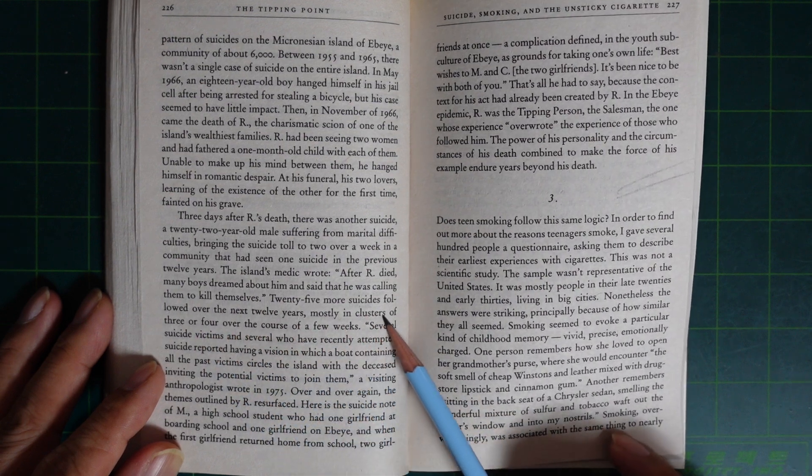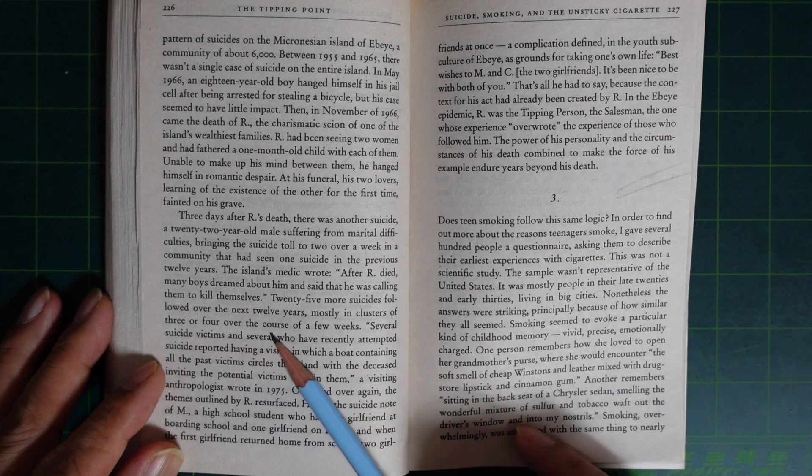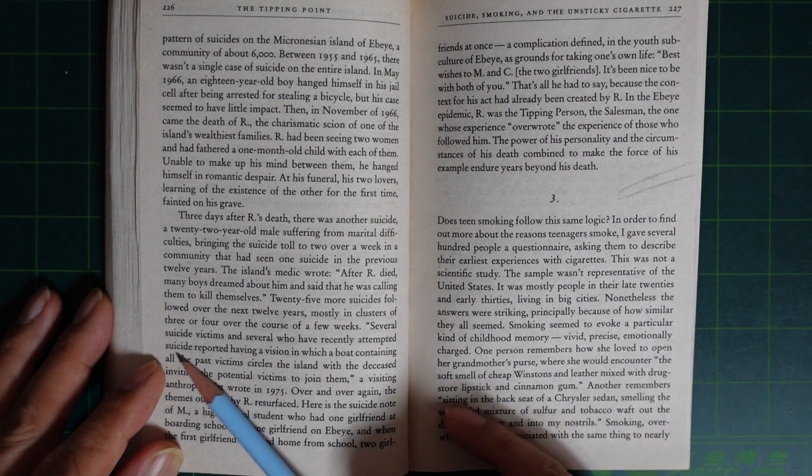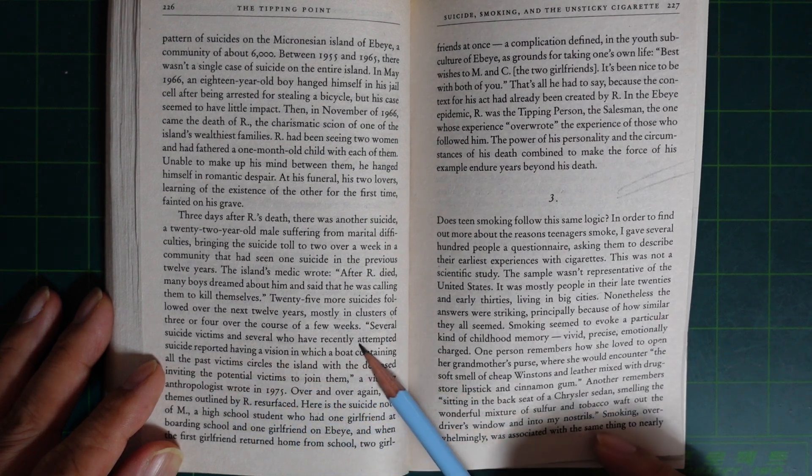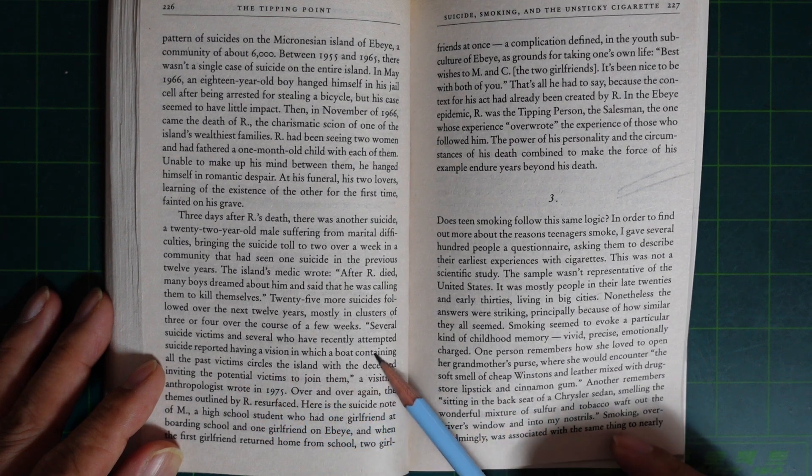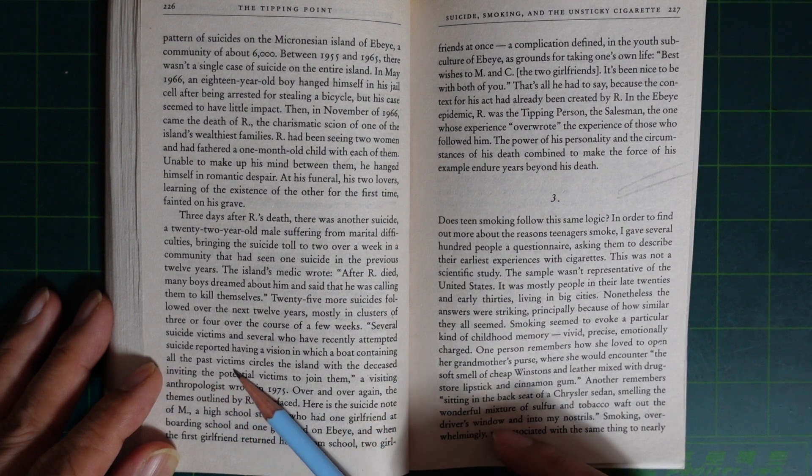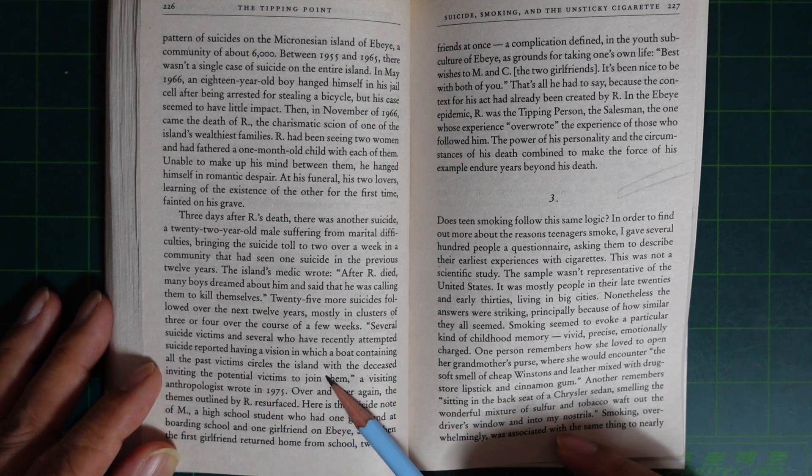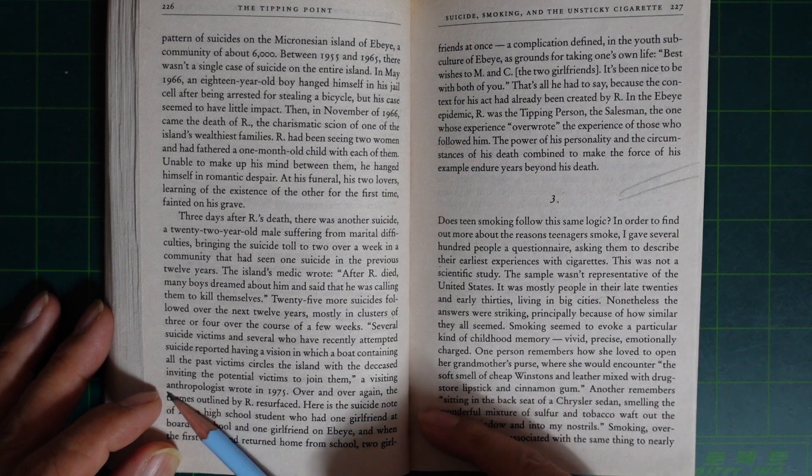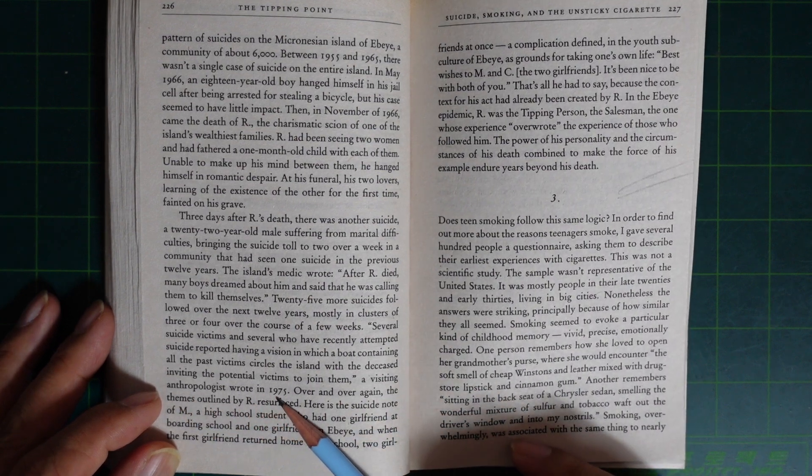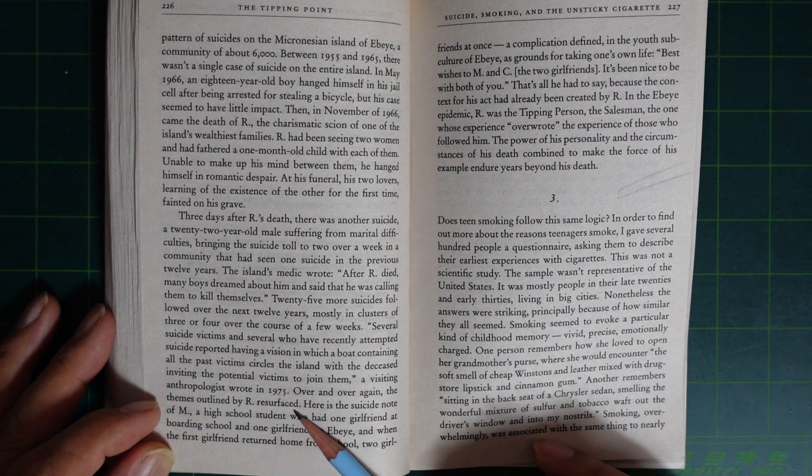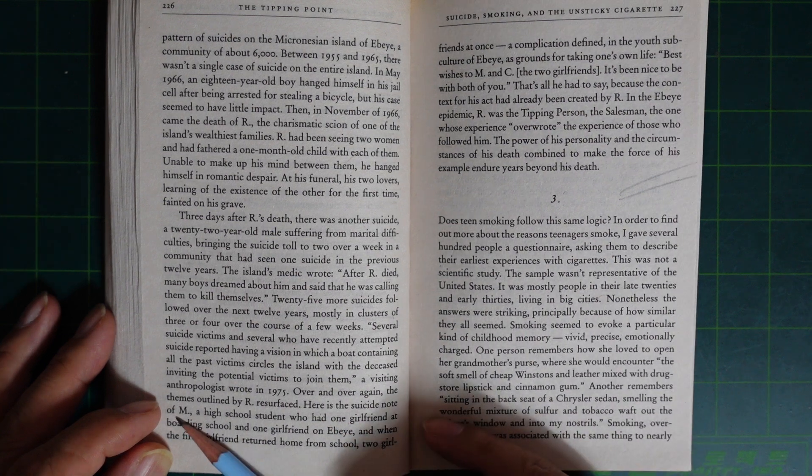Several suicide victims and several who have recently attempted suicide reported having a vision in which a boat containing all the past victims circled the island with the deceased, inviting the potential victim to join them. A visiting anthropologist wrote in 1975, over and over again, the theme outlined by R resurfaced. Here is the suicide note of M, a high school student.